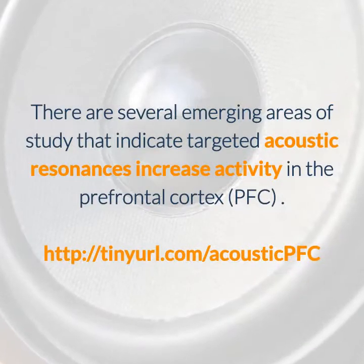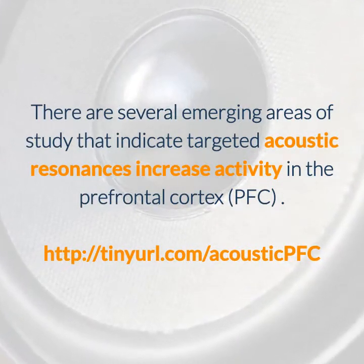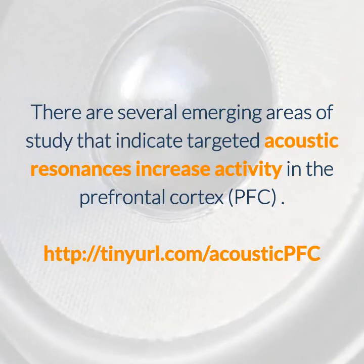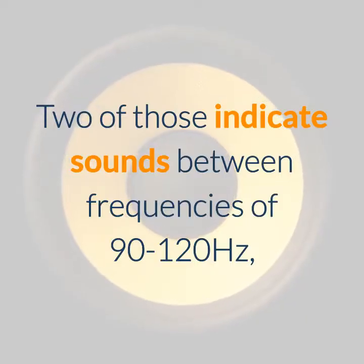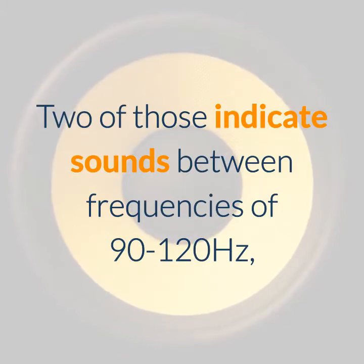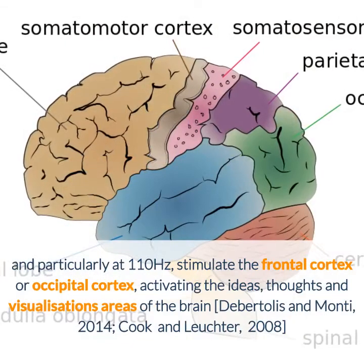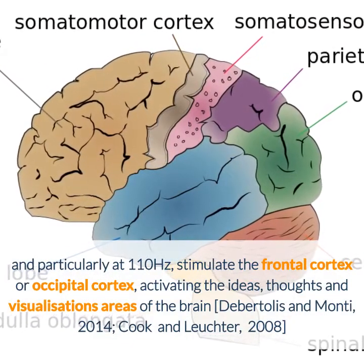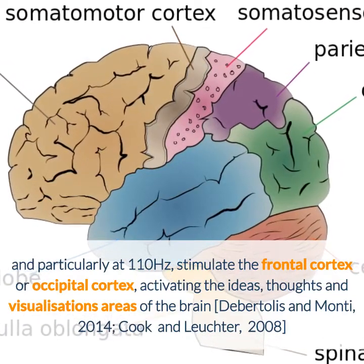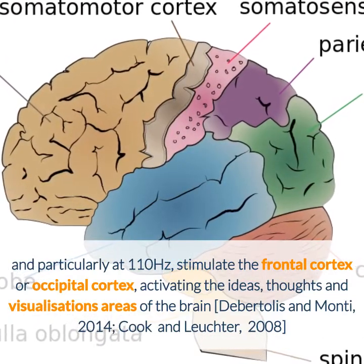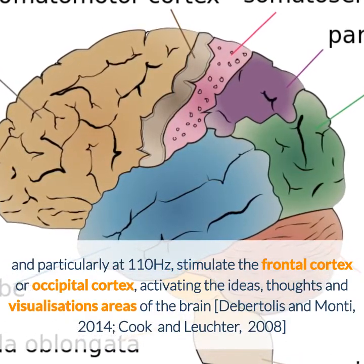There are several emerging areas of study that indicate targeted acoustic resonances increase activity in the prefrontal cortex. Two of those indicate sounds between frequencies of 90 to 120 Hz, and particularly at 110 Hz, stimulate the frontal cortex or occipital cortex, activating the ideas, thoughts, and visualizations areas of the brain.